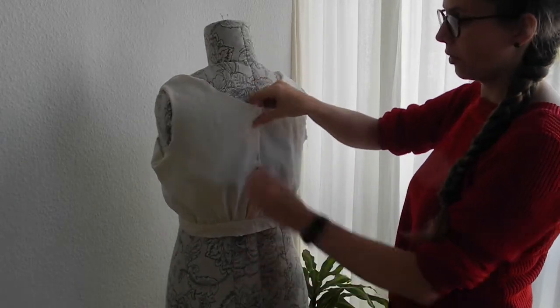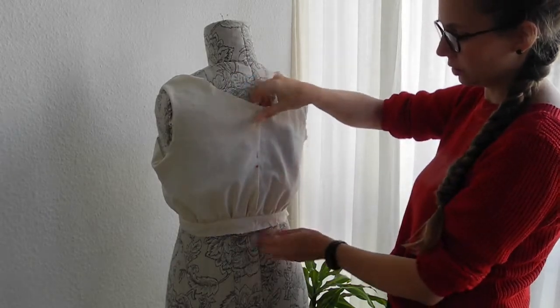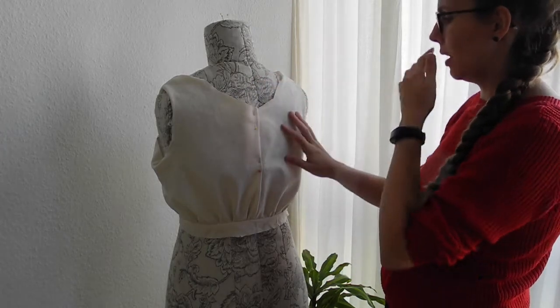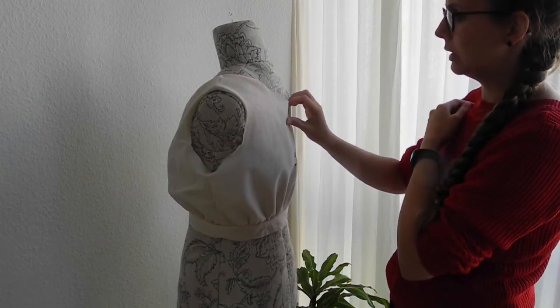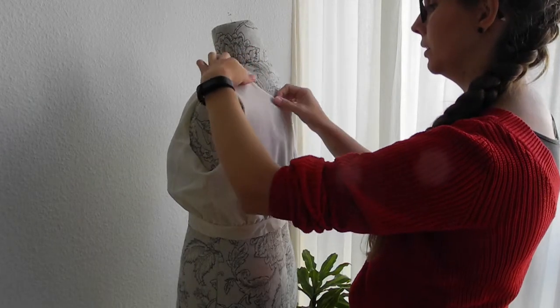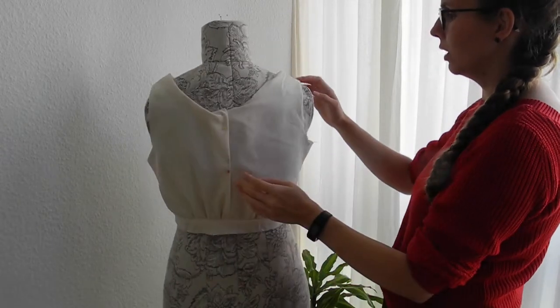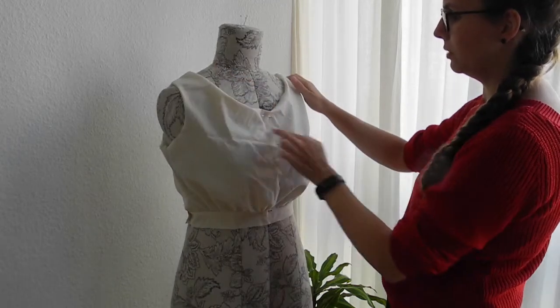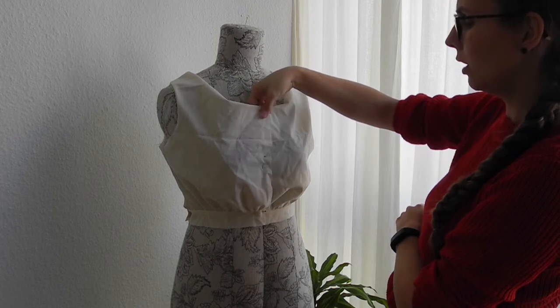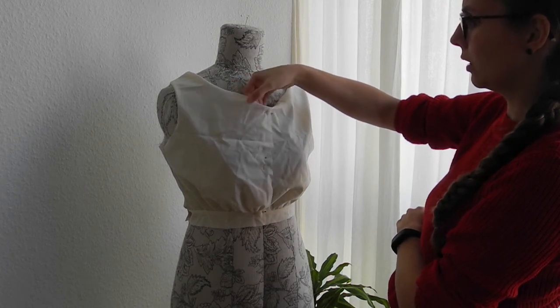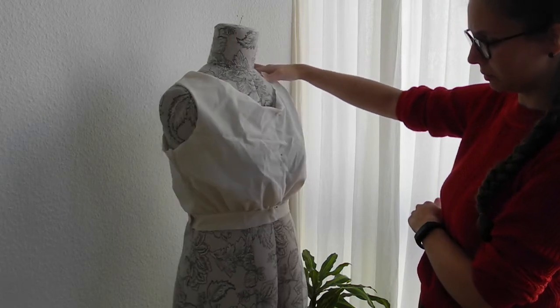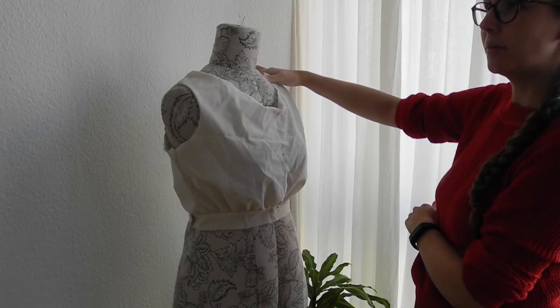So now I have to edit the waistband and I think it looks much better now. Only here at the back, there's so much material. I will take something out here. And I guess the next step I do is to cut off the seam allowance to see how deep the neckline goes. Because now I think it's a little bit too high. But first I will cut off all the seam allowance to see if that makes it better.